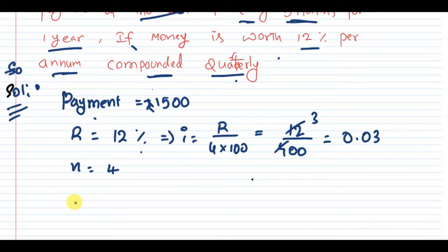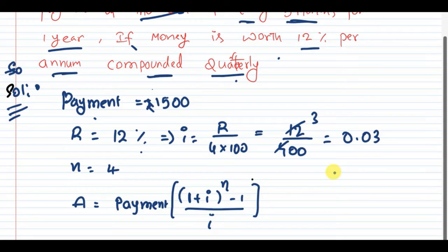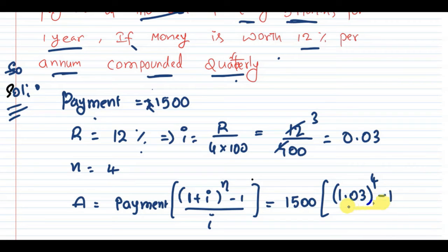Now amount A equals, we know that formula: A equals payment times [(1 + i) to the power n minus 1] divided by i. So payment was 1500, and 1 plus i means 1.03 to the power 4, minus 1, divided by 0.03.